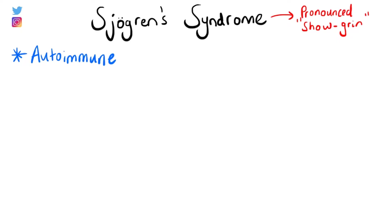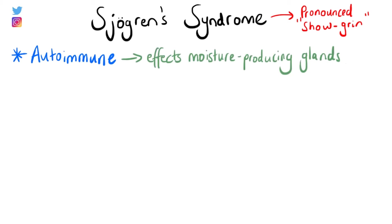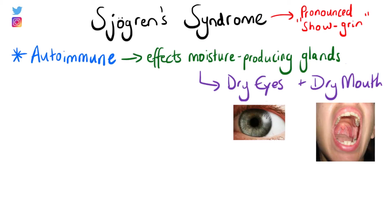In today's video we're going to be talking about Sjogren's syndrome. This is an autoimmune disease which mainly affects the moisture-producing glands. The most common symptoms associated with Sjogren's syndrome are dry eyes and dry mouth.